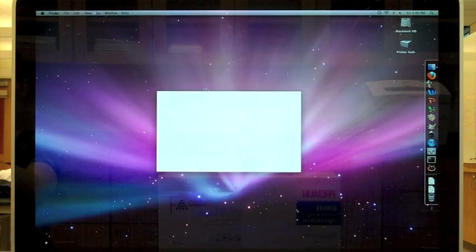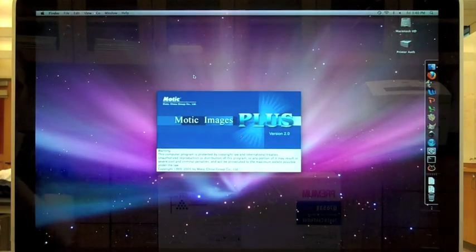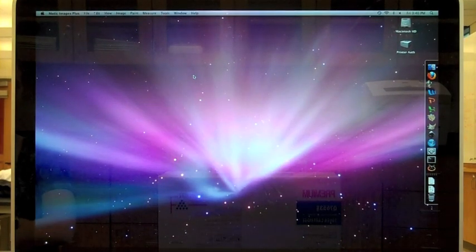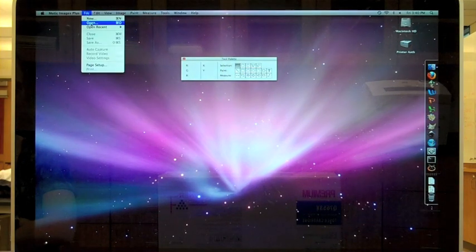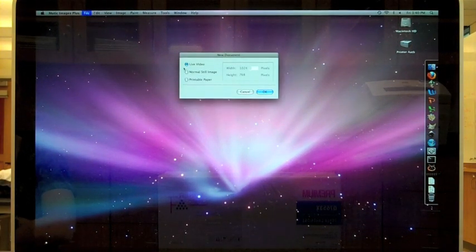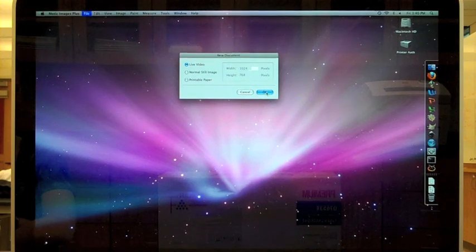Open up the MODIC Images software found on the desktop. Make sure the camera is plugged in before you start the software. Click on File, New. A box will open where live video should be pre-selected. Click OK and a new window will open.